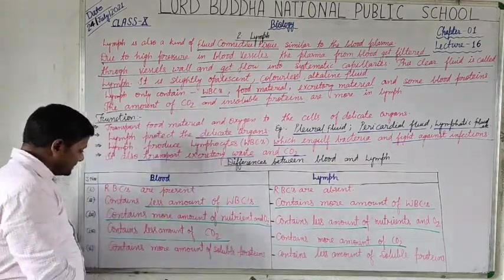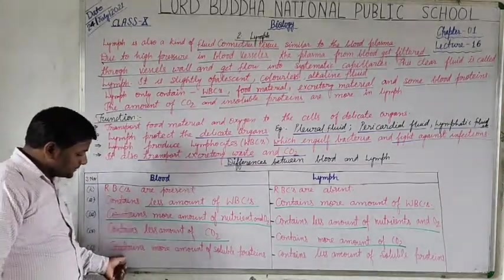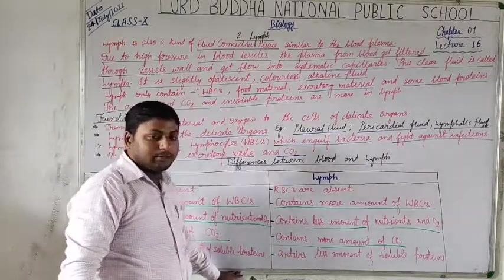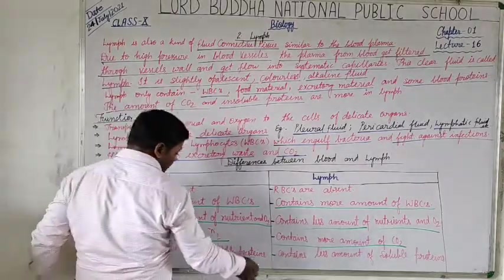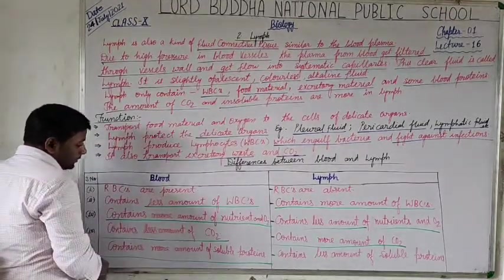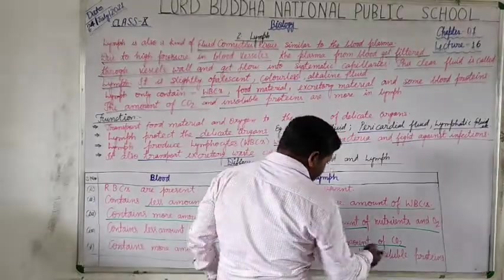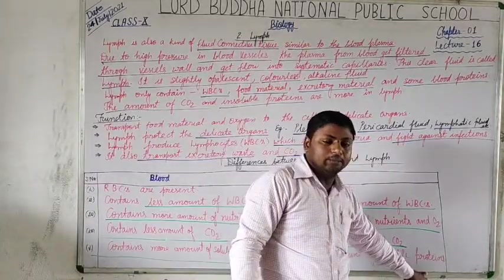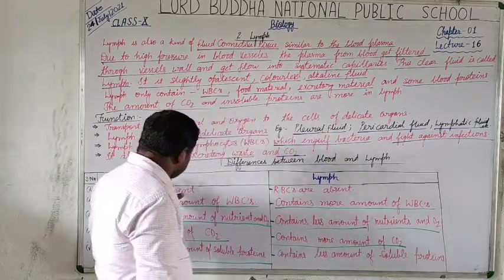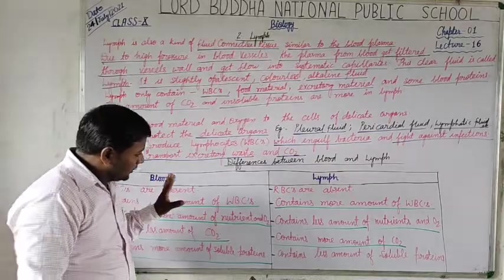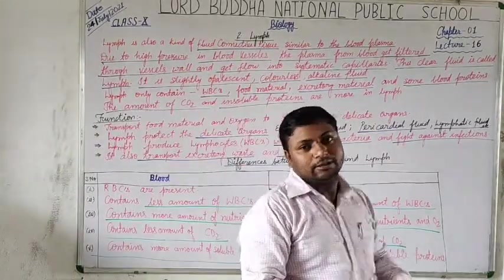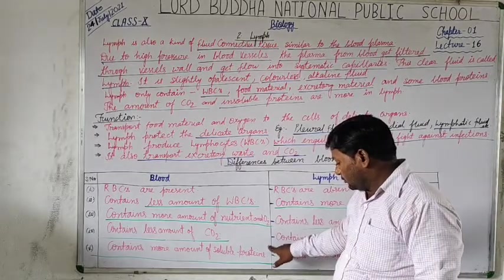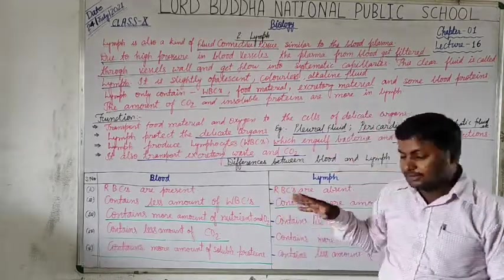Blood contains more amounts of soluble proteins — there is a rich amount of immunoglobulin-type proteins present in the blood. However, in the lymph, the amount of insoluble type of proteins is maximum, so less amount of soluble proteins are present in lymph. This difference between blood and lymph regarding proteins is a very important topic from the examination point of view, so you have to study and understand this topic quite well.